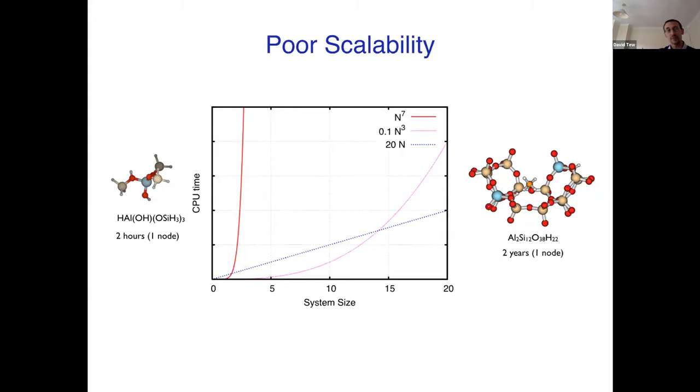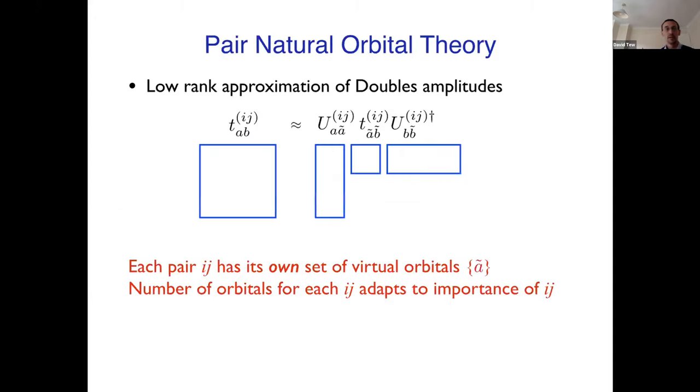So that's the context. The framework within which we address that problem - a number of people are doing this, we've seen talks, very nice talks in this sort of direction - is to make a low rank approximation of the doubles. So in pair natural orbital theory, this is the essence of it: you make a low rank approximation of the doubles amplitudes.